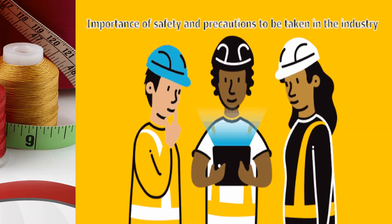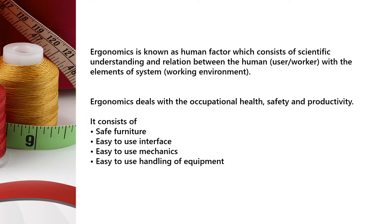Importance of Safety and Precautions to be Taken in the Industry. Ergonomics is known as human factor which consists of scientific understanding and relation between the humans with the elements of the system. Ergonomics deals with occupational health, safety, and productivity.